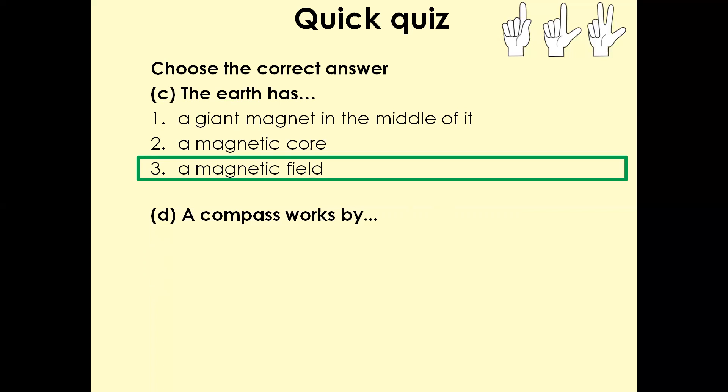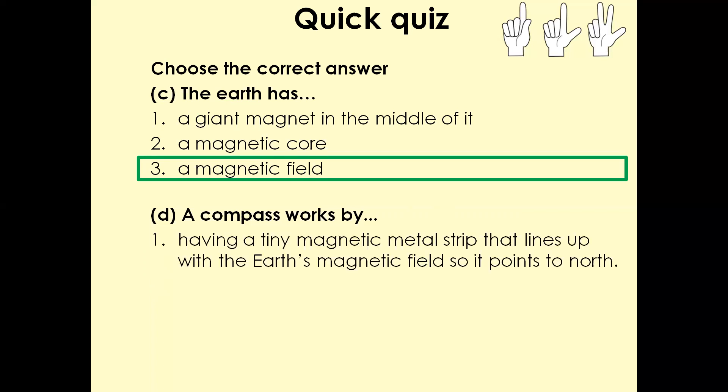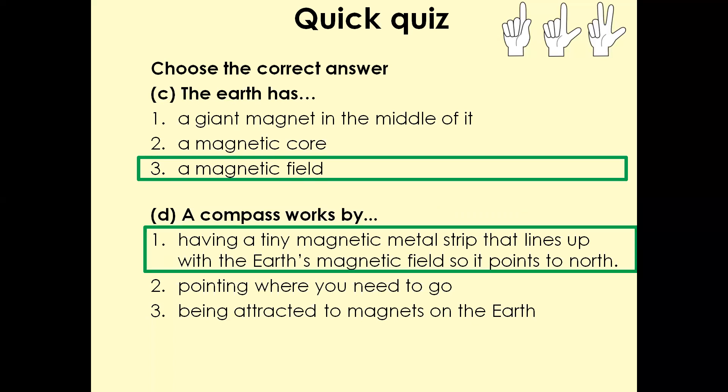Next question. A compass works by, option one, having a tiny magnetic metal strip that lines up with the earth's magnetic field so it points to the north. Option two, pointing where you need to go. And option three, being attracted to magnets on the earth. Three, two, one. The answer is having a tiny magnetic metal strip that lines up with the earth's magnetic field so it points to the north.